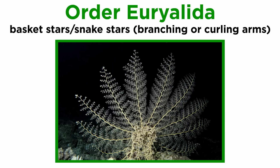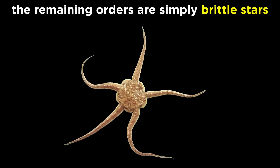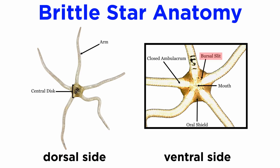Members of order Urialida are commonly called basket stars, and are large species with branching arms, or long and curling arms, sometimes called snake stars. Meanwhile, members of the remaining orders are often simply referred to as brittle stars, use bursae for respiration and excretion, have their madreporite on the oral surface, and move their arms by using ball and socket joints.